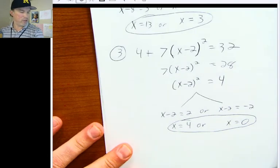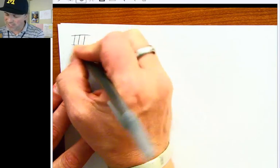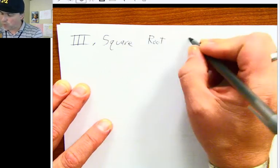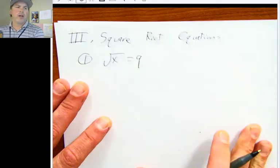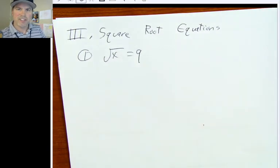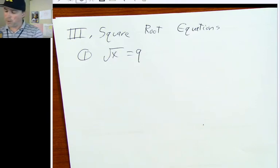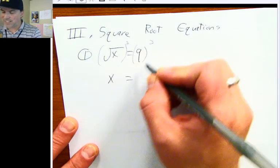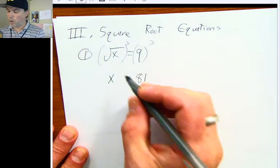Now let's look at the exact opposite of quadratic equations: square root equations. These will go a lot quicker. Square root equations, number one: the square root of x equals nine. There's not going to be two solutions on this one. The opposite of square rooting is squaring, so we square both sides. The square root of x squared is x, and nine squared is 81. So x equals 81 — not positive or negative 81, because you cannot take the square root of a negative number.